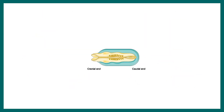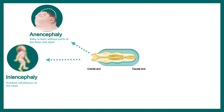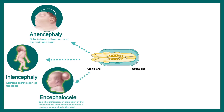If the cranial end of the neural tube fails to close, there are many defects, like anencephaly, where the baby is born without a significant part of its brain. Then there is iniencephaly, which leads to an extreme retroflexion of the head. There are also defects known as encephalocele, where a sac-like protrusion is found in the back of the head.